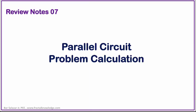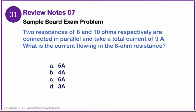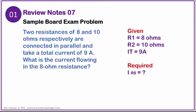In this review notes, we will discuss problems related to parallel circuits and some principles involved in it. Here is our problem for this review note: two resistances of 8 and 10 ohms respectively are connected in parallel and take a total of 9 amperes. What is the current flowing in the 8-ohm resistance? Analyzing the problem, we have two parallel resistances R1 and R2.